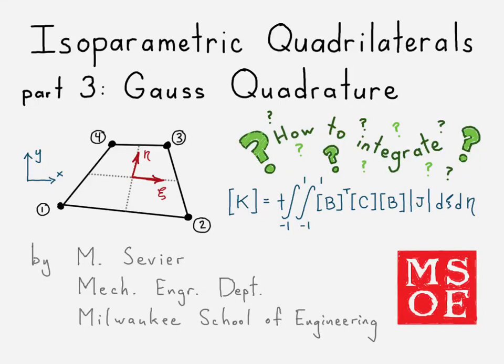All right, now we've moved on to part three in our video series for isoparametric quadrilateral elements, where we look at Gauss quadrature, which is the numerical method that we will use to integrate the stiffness matrix for this element type.